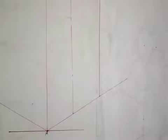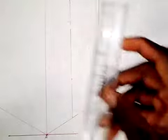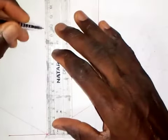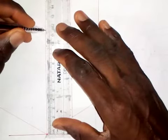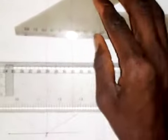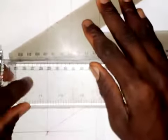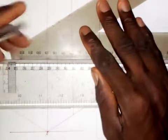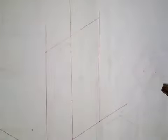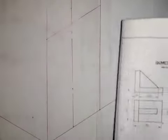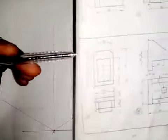The next thing is to take a measurement of 115 millimeters from this point. This is 115 millimeters. I'm going to transfer this to the other side. I want to bring out the shape of the front elevation — the face that we have here.